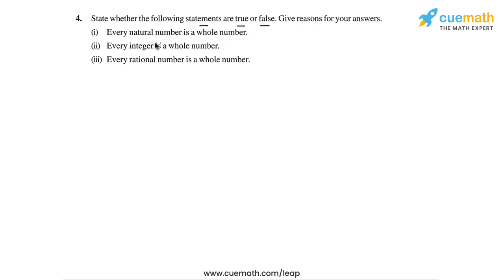The first statement says every natural number is a whole number. This statement is true because the set of whole numbers is simply the set of natural numbers combined with the element 0.